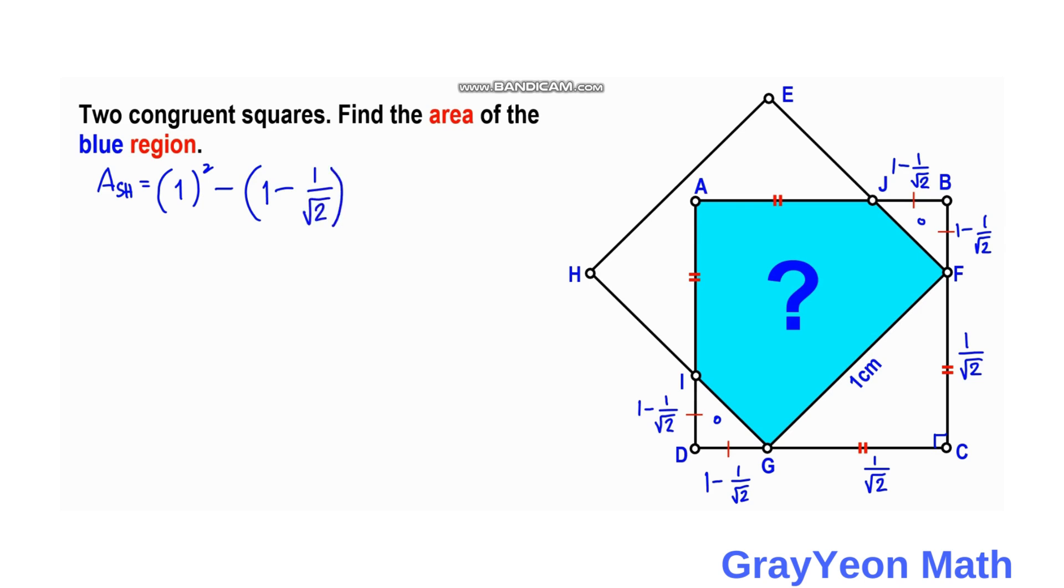...minus this bigger isosceles triangle. So that is 1 half times the base times the height. So the base is 1 over square root of 2, and the other is 1 over square root of 2 also, because it is an isosceles triangle.